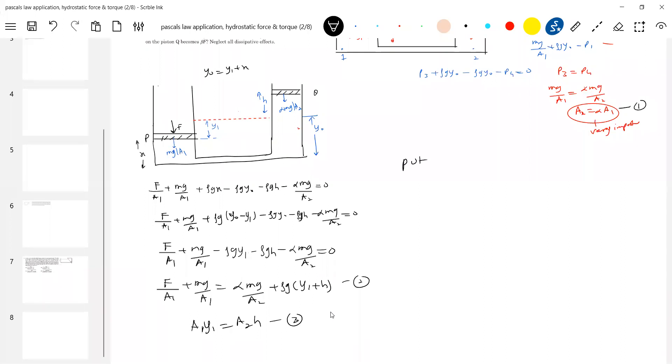I will proceed here now. Put 3 in 2. F by A1, MG by A1, alpha MG by A2, plus rho G. Y1 is how much? A2H by A1 plus H. So if I simplify all, F by MG by A1 is equal to alpha MG by A2, Rho G H. Equation 4. MG by A1 minus MG by A1 is equal to alpha MG by A2. Here. So shall we substitute here. Let's put 1.